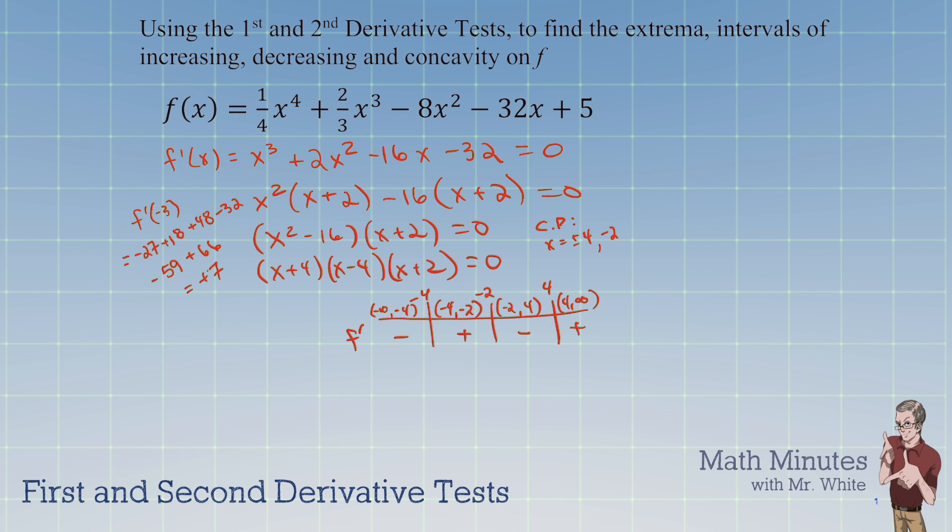So what does this tell us about the original function f? This means that f of x is decreasing on this interval, then it's increasing on that next one, then it's decreasing again, and then it's increasing at the very end. I'll show you the graph of f of x at the end. I don't want to give things away. We've identified when you're decreasing and increasing.